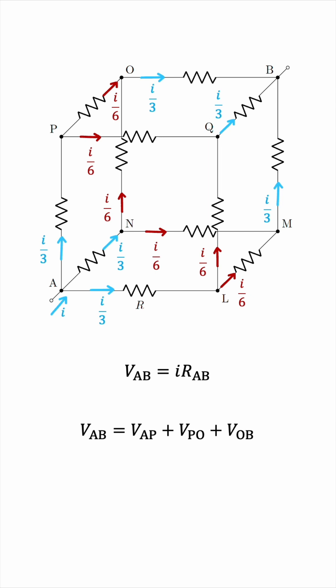Now, looking at VAP from the diagram we have, we can see that by Ohm's law we simply have I over 3 times R. VPO will be I over 6 times R, and VOB will be I over 3 times R. And now we can factor out an IR from this. We have 1/3 plus 1/6 plus 1/3, and that gives us 5 over 6.